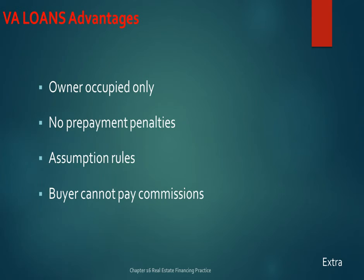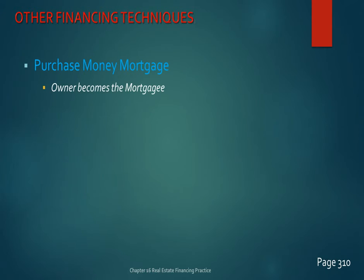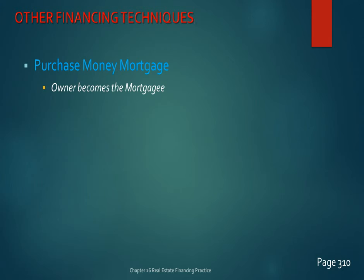A purchase money mortgage is where the owner becomes the mortgagee — the lender. If you own property free and clear and a buyer can't get a traditional loan, you can become the lender: they make a down payment to you and make mortgage payments to you for 5, 10, or 20 years. You receive the note and mortgage, and if they don't pay, you can foreclose just like a traditional mortgage lender.